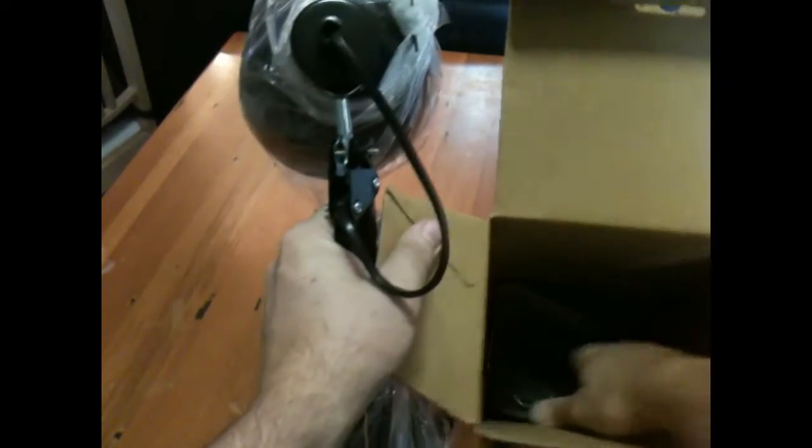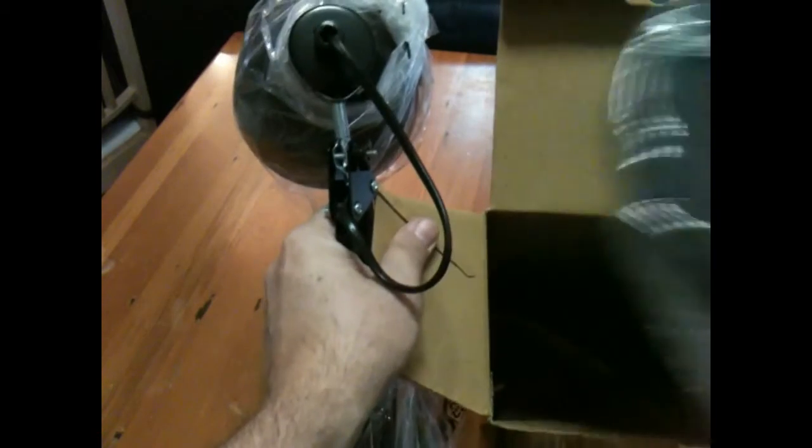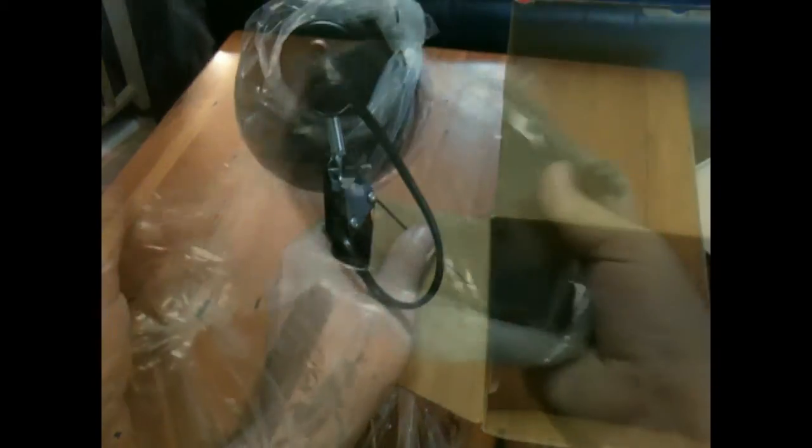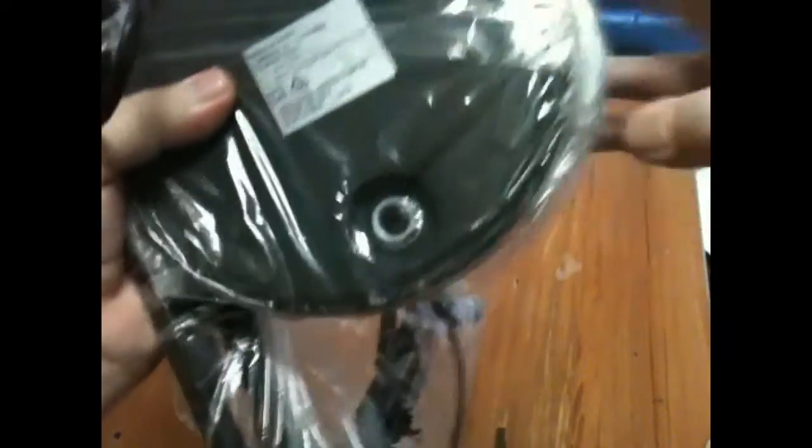For the base of the jib I used a drafting lamp. This drafting lamp costs $15 at Kmart. This model has a very good heavy base which will come in handy for counterbalancing the phone when it's attached.